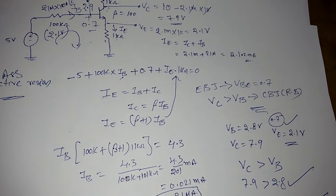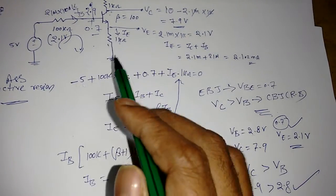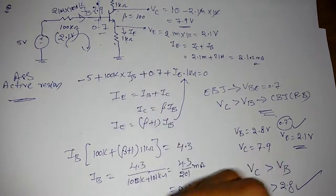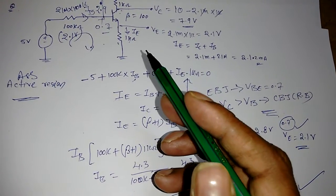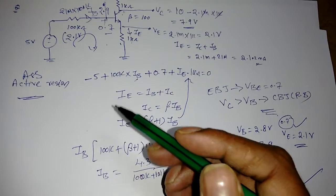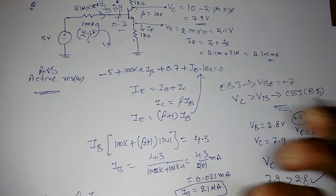In the next lecture, we will assume the transistor is in saturation and work to find IC, IE, IB, VC, VE, VB, and conclude whether it is in saturation or active region.